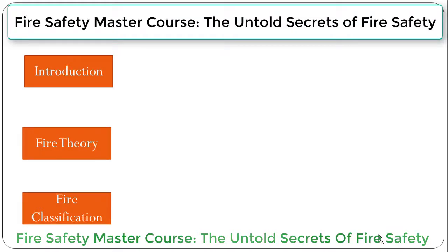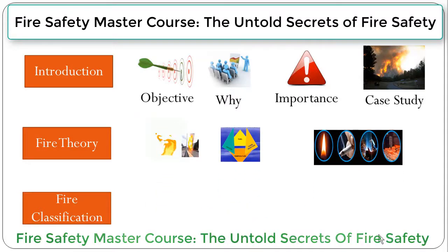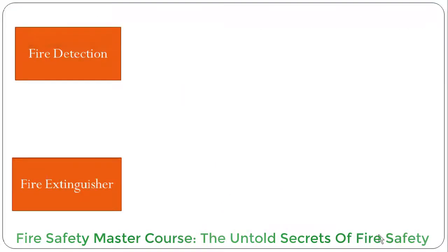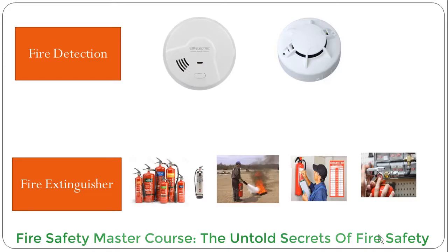This course is divided into various sections. The first is introduction, covering the objective of the course, why we need this training, importance of fire safety and a fire case study. Fire theory will explain the chemistry of fire and various kinds of fuel and ignition sources. Fire classification will cover various kinds of fire classes. Fire reduction will cover the working principle of different kinds of fire reduction devices. The fire extinguisher section will elaborate the main features of various kinds of fire extinguishers, how to use a fire extinguisher, the procedure for inspection and maintenance, and how to test a fire extinguisher.